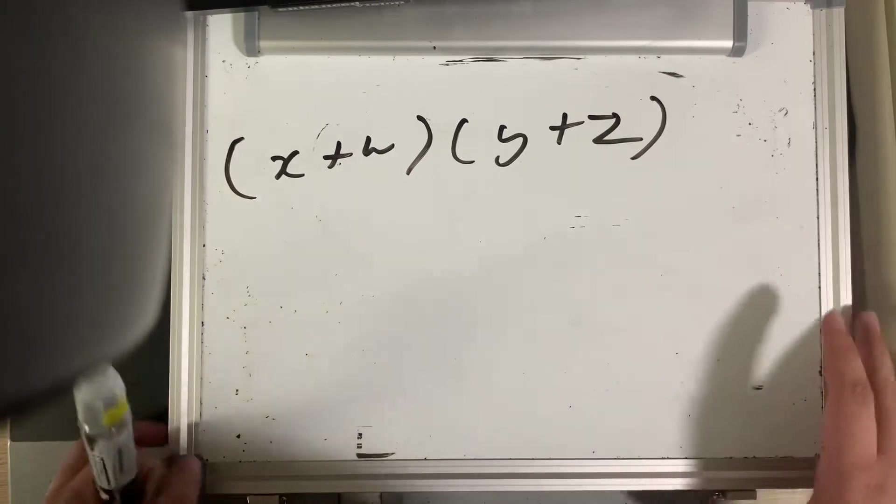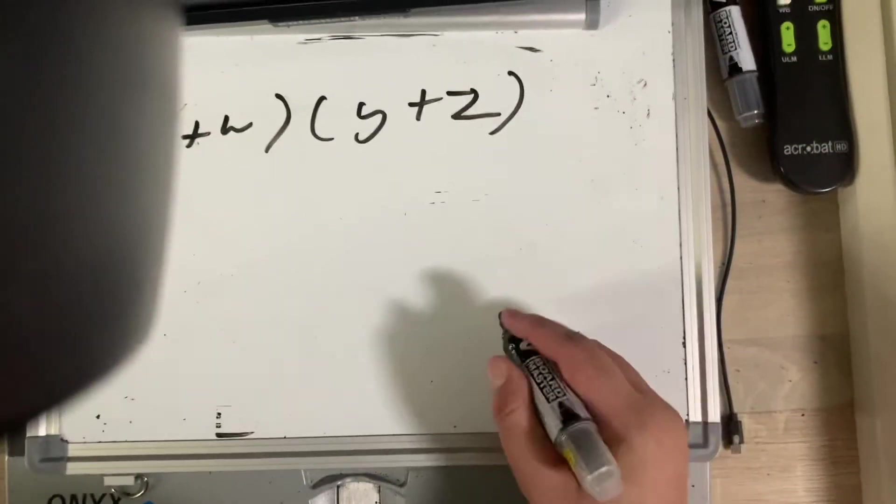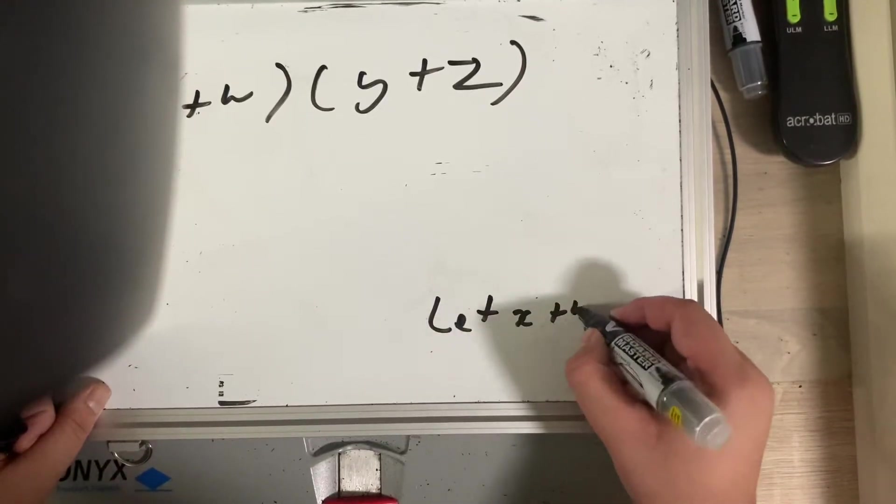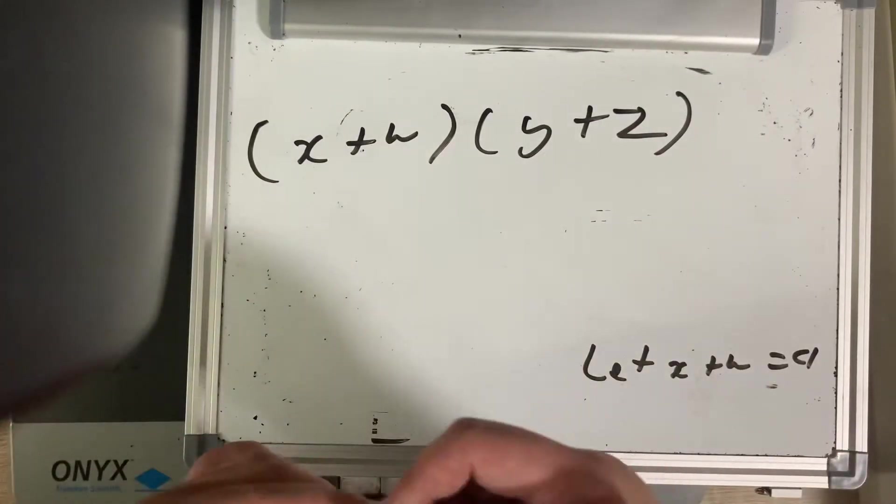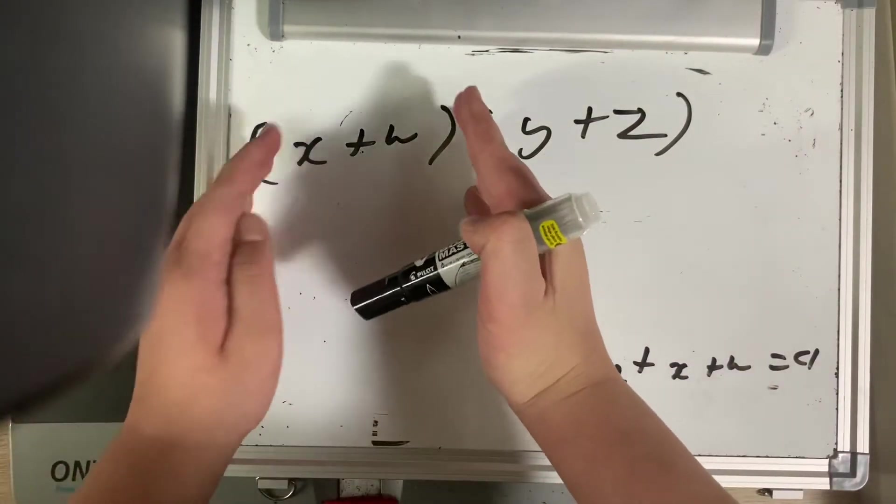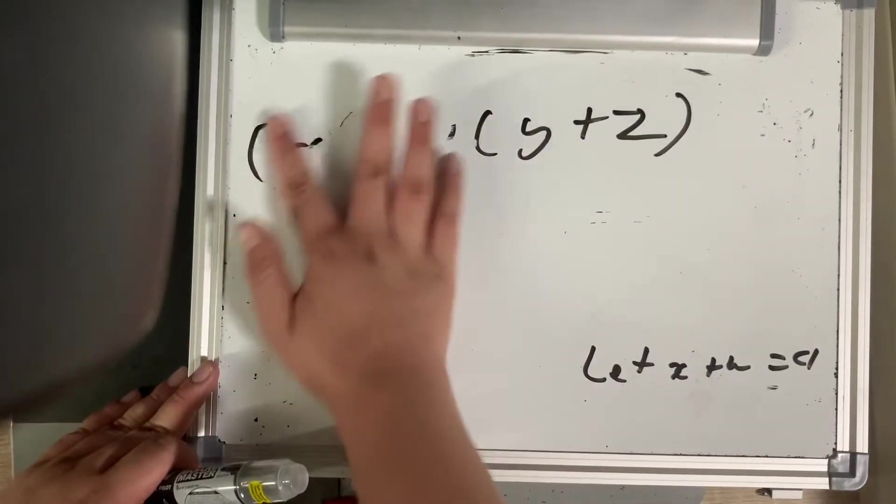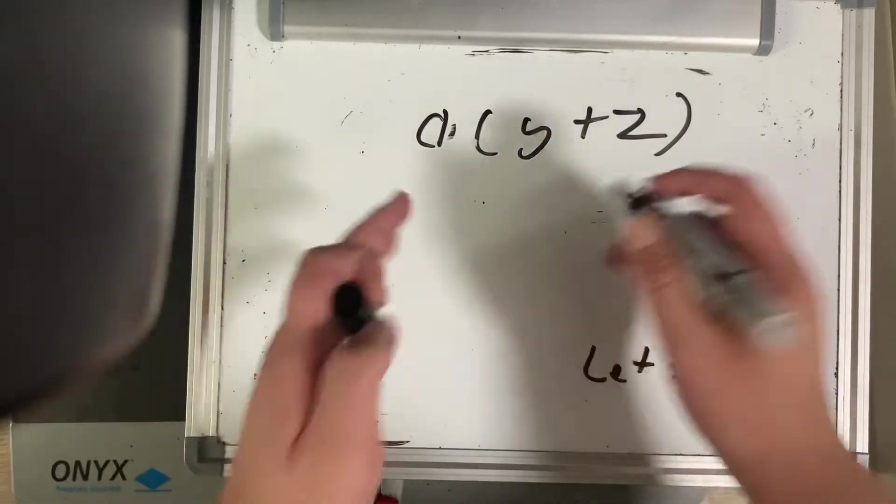One way we could simplify this is we can let x plus w equal a. Essentially, we're going to do something like the Trojan horse, where we're going to disguise x plus w as a. We're going to collapse it and make this equal to a. Let's do that. We're going to substitute it as a. And now, it's simpler.